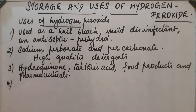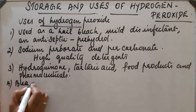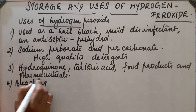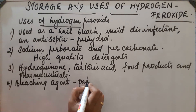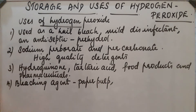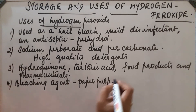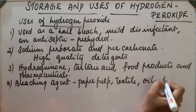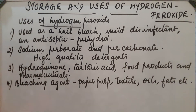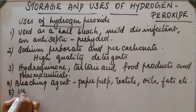Next, it is used in industries as a bleaching agent — in industries like paper and paper pulp industry, textile industry, oils, fats, etc.